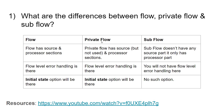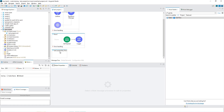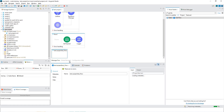Coming to private flow, it will also contain the source, but we will not use anything in the source part — we will configure the processors in the processor part. Now, sub flow does not have any source part at all. It only has the processor part. So we don't have that source category here.